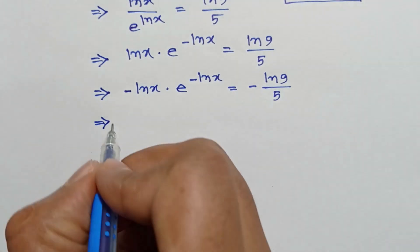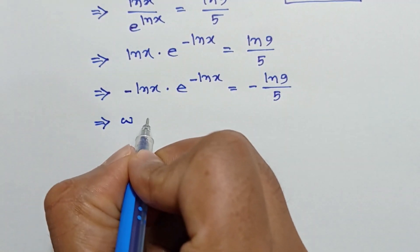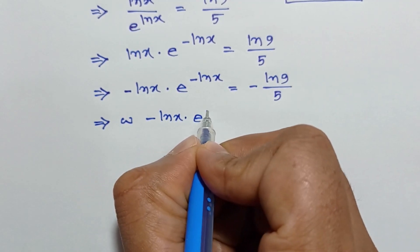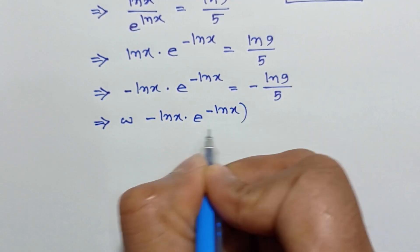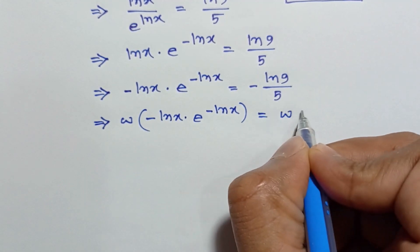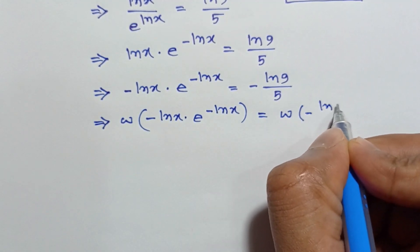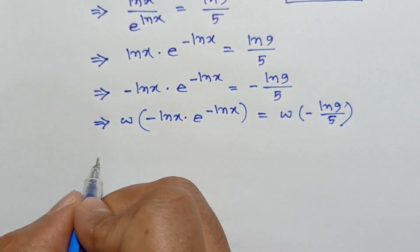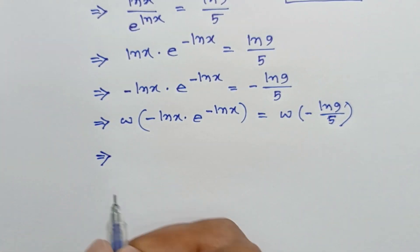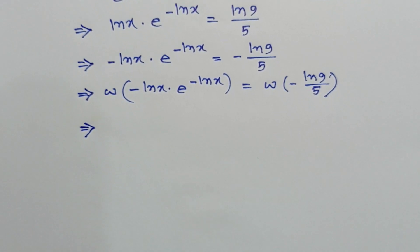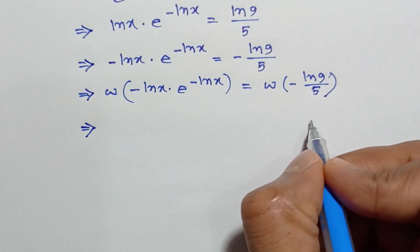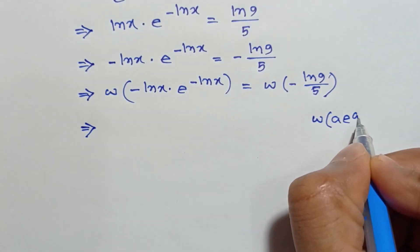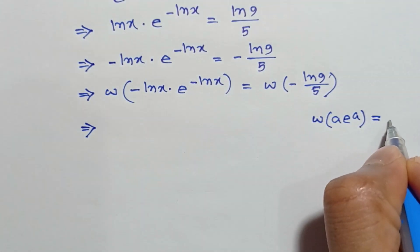Taking the Lambert W function of both sides, we have W of negative ln x times e to the power negative ln x is equal to W of negative ln 9 over 5. According to the formula of the Lambert W function, W of a times e to the power a equals a.